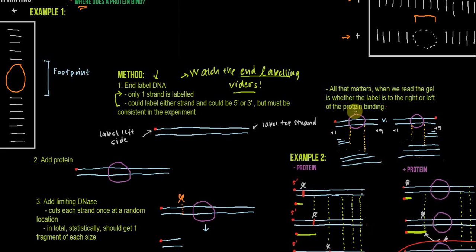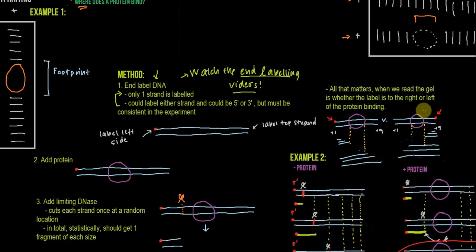All that matters when you read the gel is whether the label is to the right or the left of the protein binding site. Here's a diagram showing why. Imagine we have the same protein and the same DNA, but what's different is which end is labeled — here it's labeled on the left side of the protein, and here it's labeled on the right side. When DNase cuts, if the label is on the left, the fragments near plus one are the smallest and fragments near plus nine are the biggest. However, if the starting DNA is labeled on the right side of the protein, the small fragments are near plus nine and the big ones are near plus one. Based on the size of the fragments aligned to the sequence, we can tell whether the DNA was labeled to the right or the left.